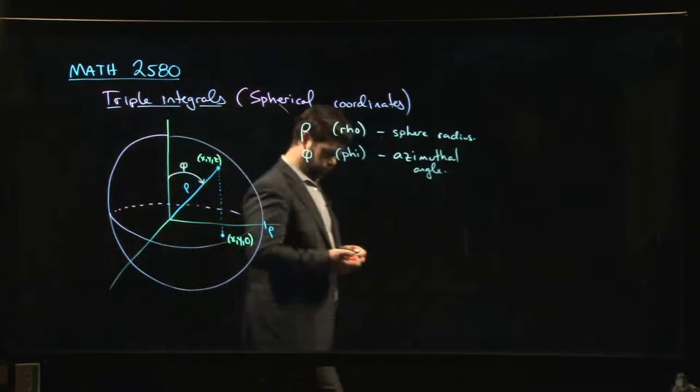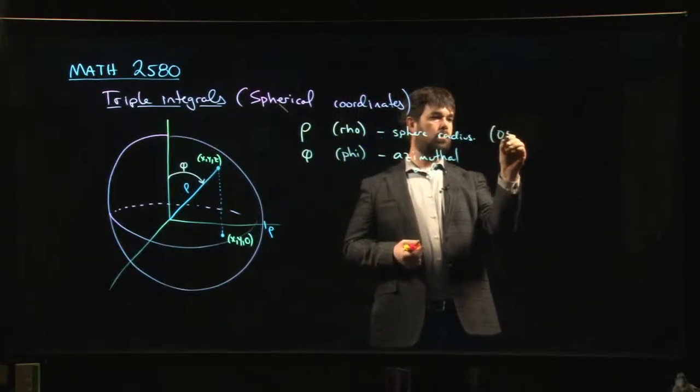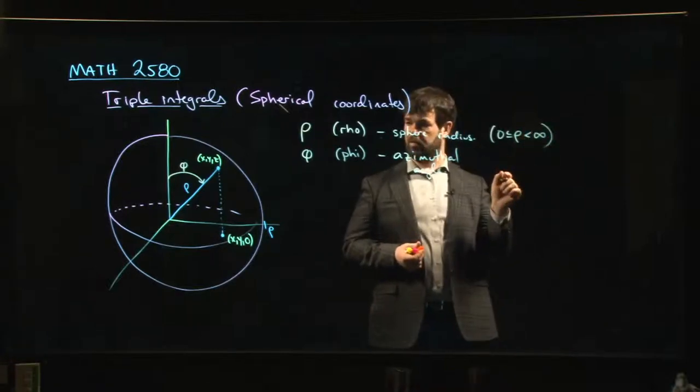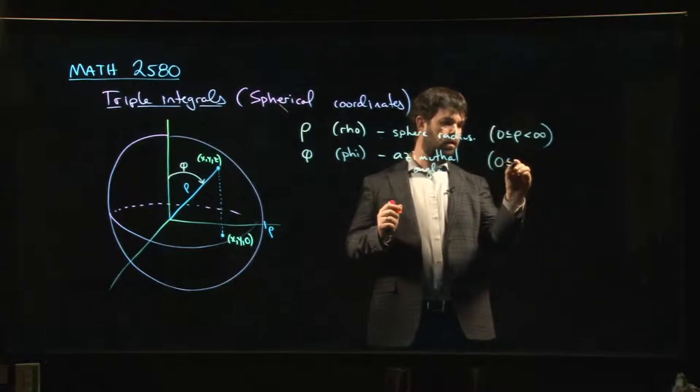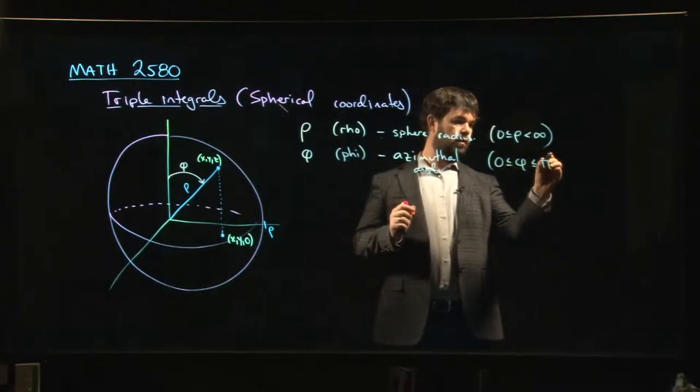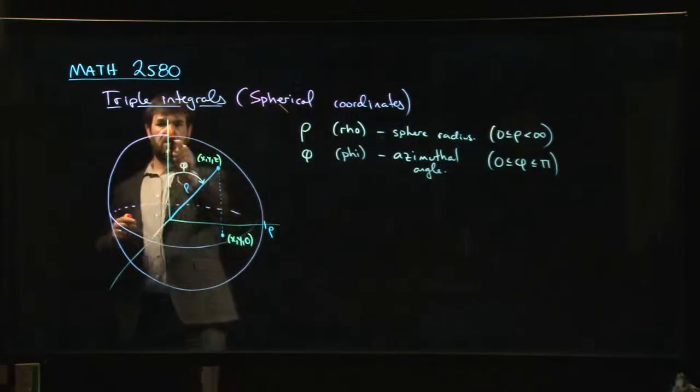Notice that rho can be any positive real number. Phi goes from zero to pi because you start here, north pole is zero.